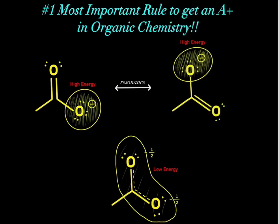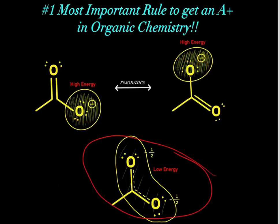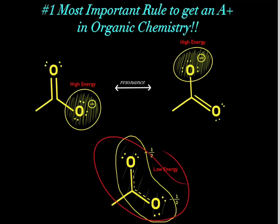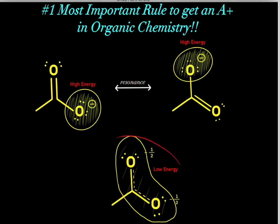That is why we go through resonance in the first place. In each individual resonance structure, we had high negative charge density. However, when we go through resonance and form the hybrid resonance structure, we get low charge density — that charge is spread out over a larger volume. That's lower charge density, lower in energy, and more stable. That's why compounds go through resonance — it's a lower energy state because of the lower charge density.